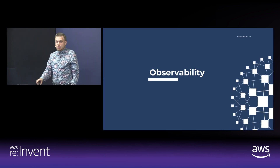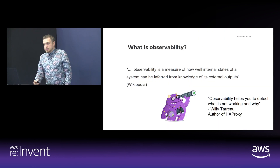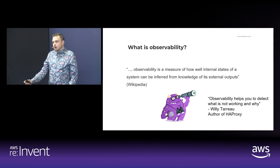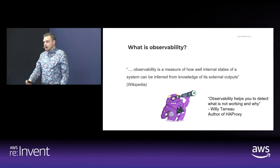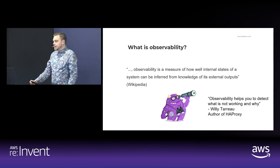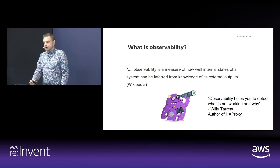Let's give a little bit of information on observability before we dive in. What is observability? According to Wikipedia, observability is a measure of how well internal states of a system can be inferred from knowledge of its external outputs.